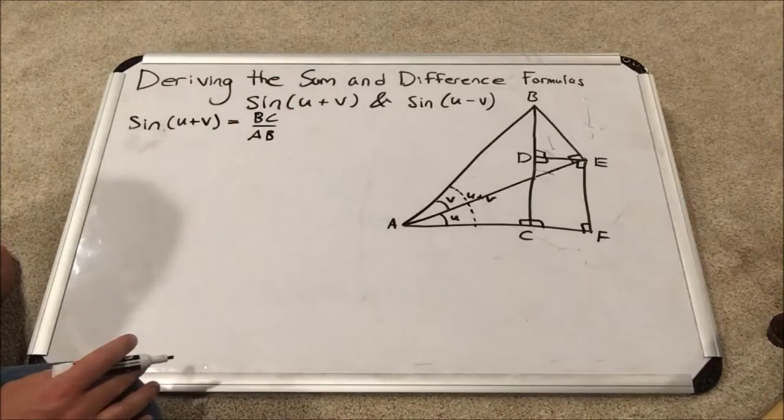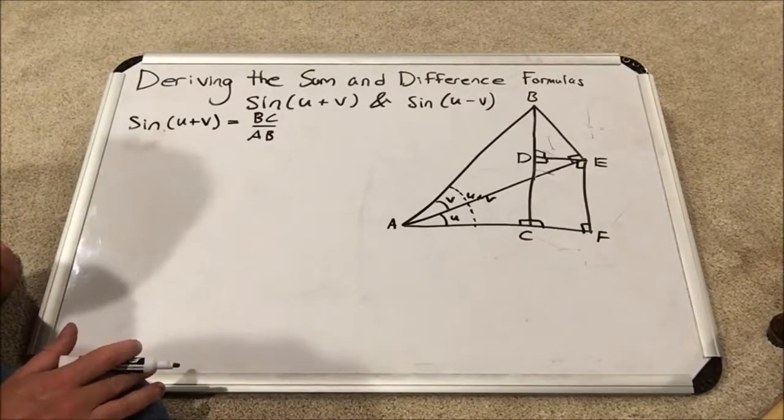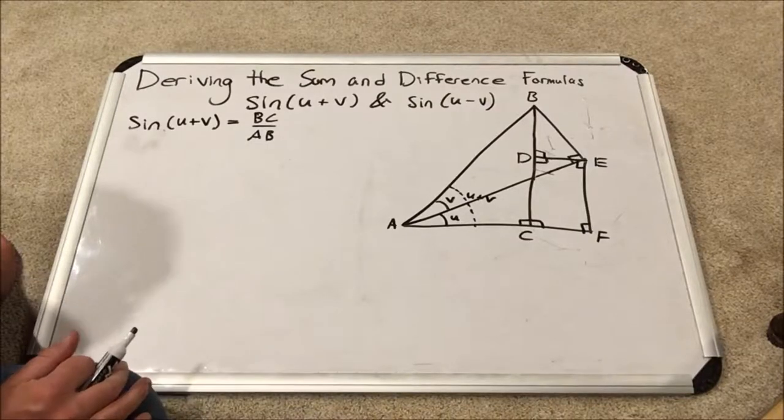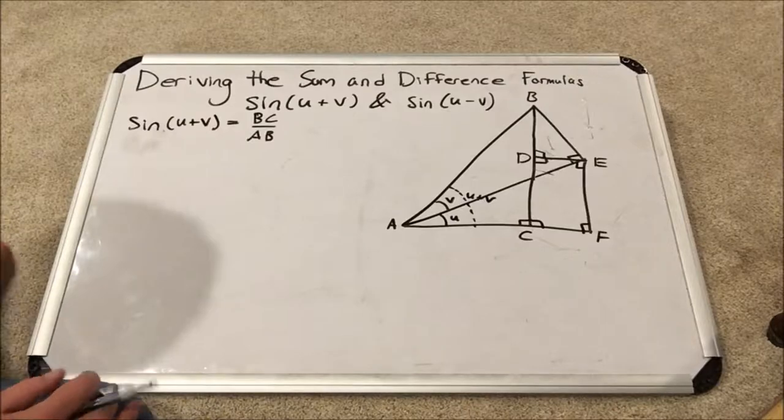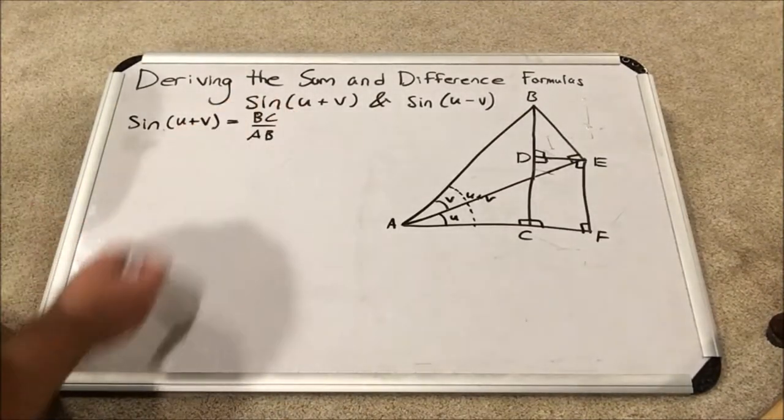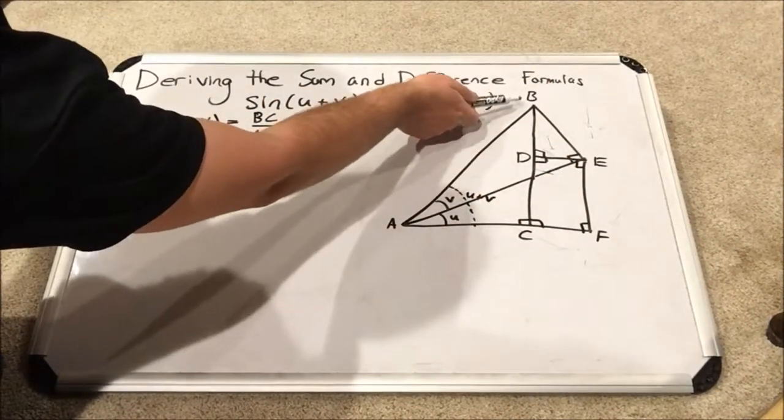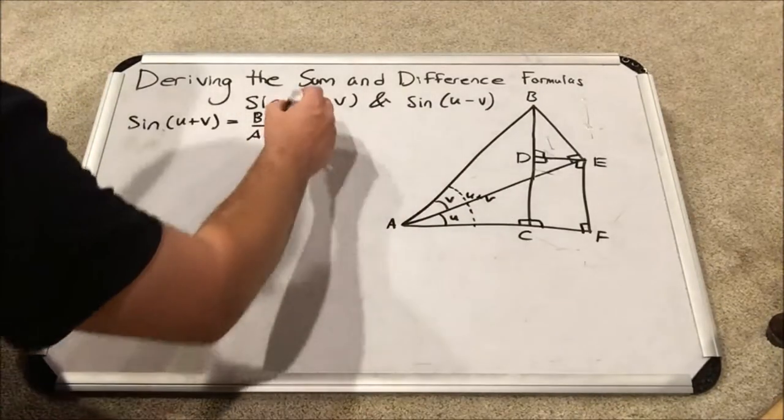So everything else after this point is going to seem rather unintuitive to you. Some proofs happen to be that way, which makes them that much more remarkable to have solved in the first place. Here's what we're going to do. I'm going to break up BC into its two segments that it's equal to. BC as you can see is equal to BD plus DC.